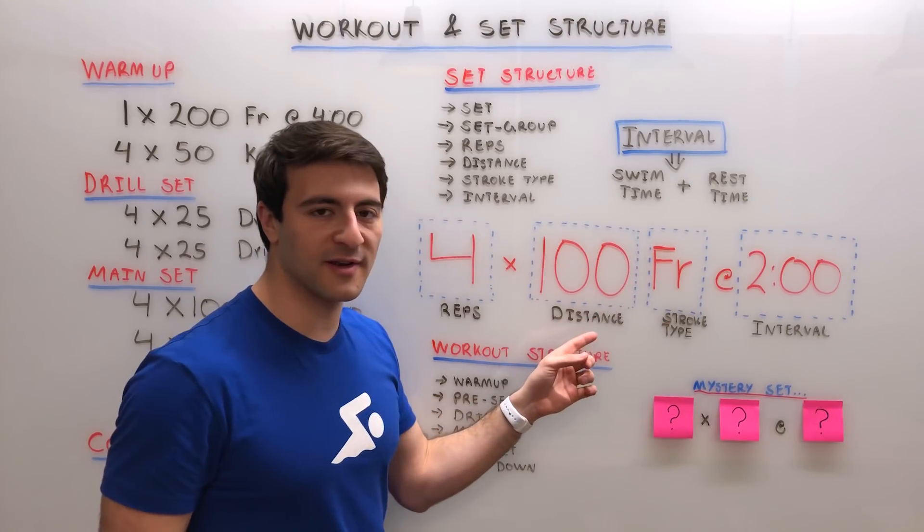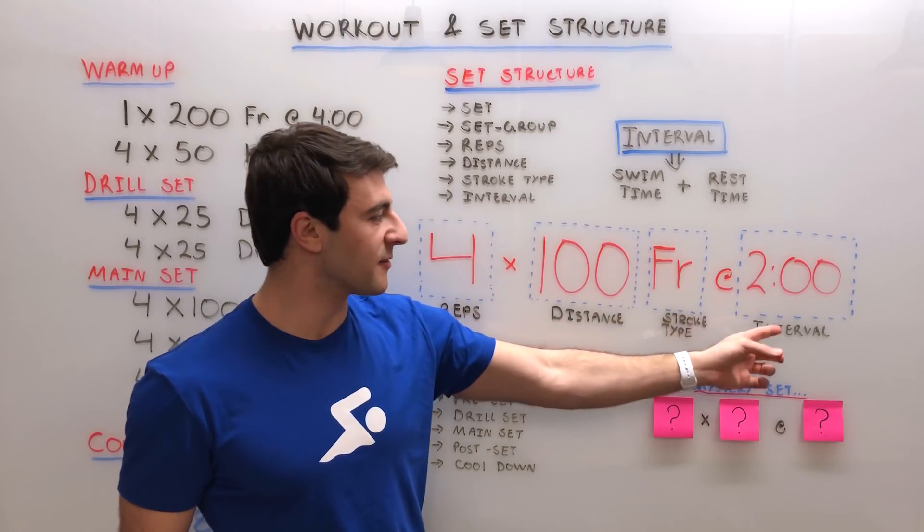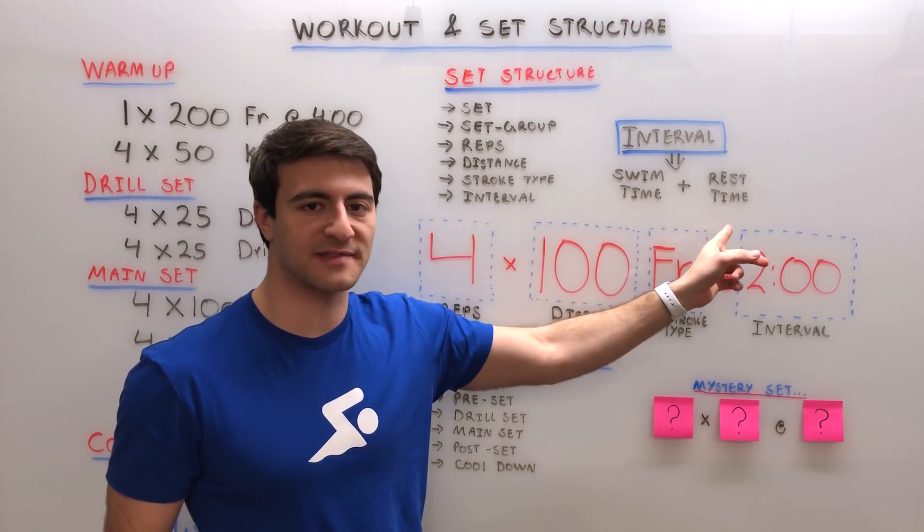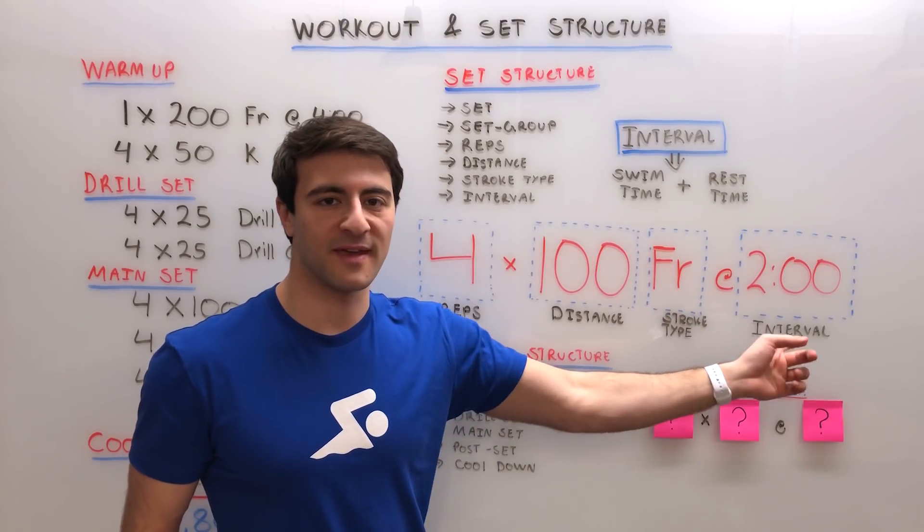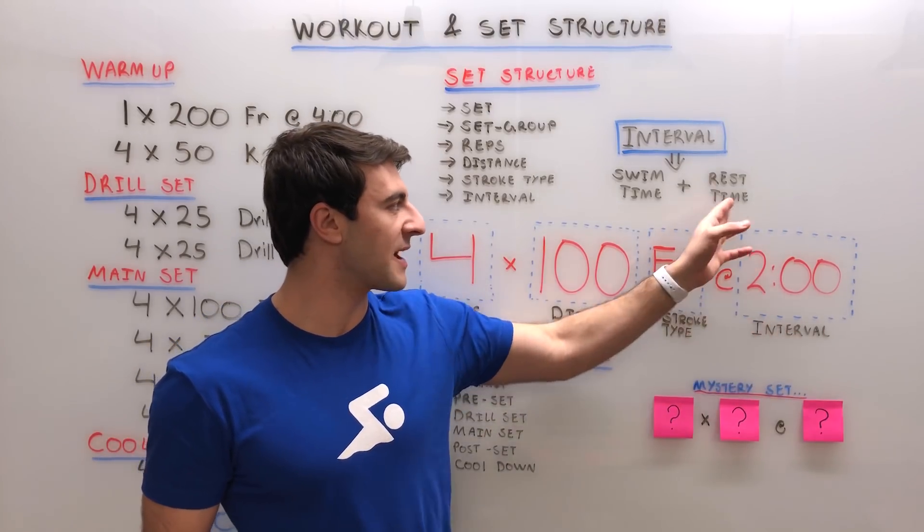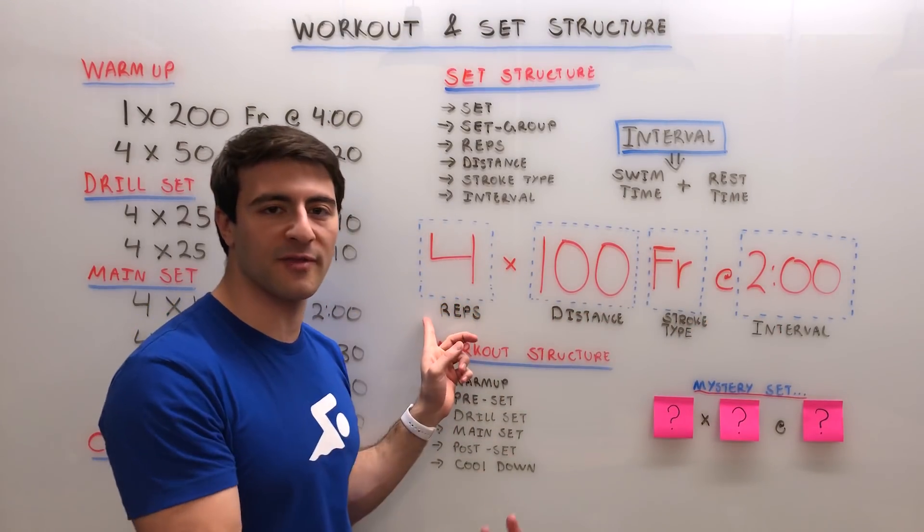So you do 100 yards or meters freestyle four times. The interval of two minutes represents the swim time plus the rest time. So if you can swim 100 freestyle in a minute and 30 seconds, you'll have 30 seconds of rest before you have to leave for number two, and you'll do four of those total.